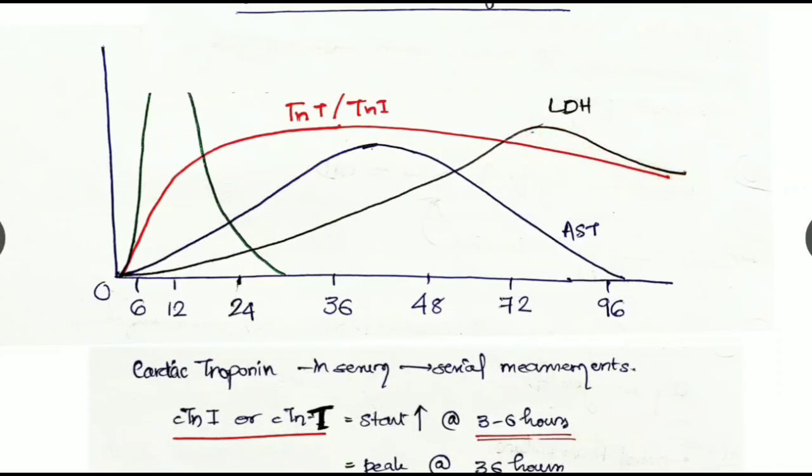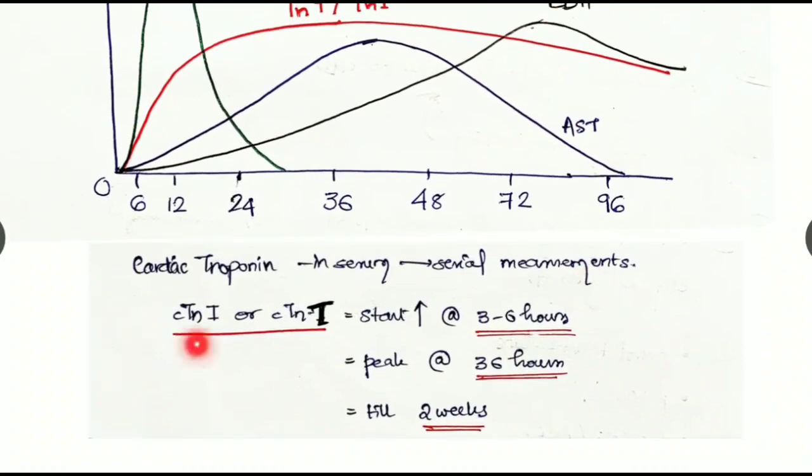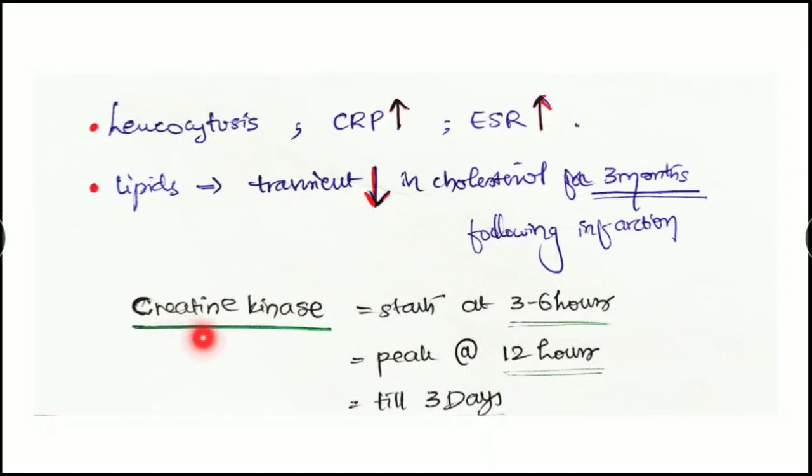Mainly the cardiac troponin in the serum are taken with serial measurements. Cardiac troponin I or cardiac troponin T starts rising by the end of three to six hours, reaches the peak by about 36 hours, and persists for around two weeks. Creatine kinase starts at three to six hours, reaches the peak at 12 hours, and persists for around three days.